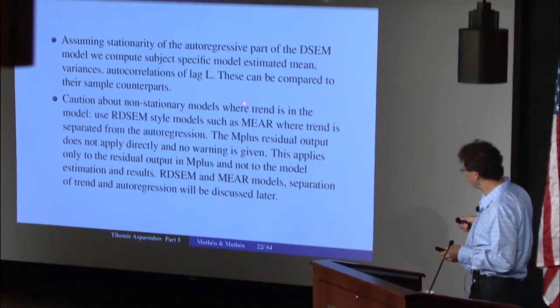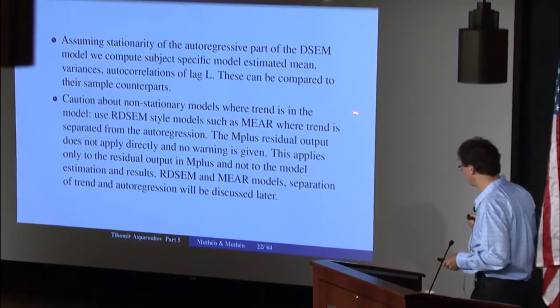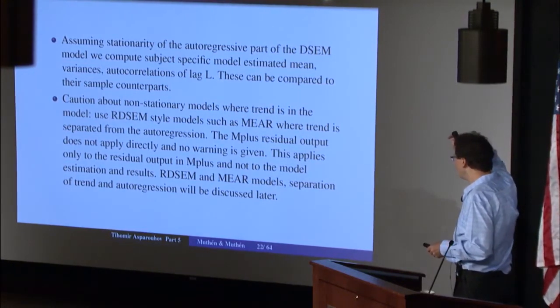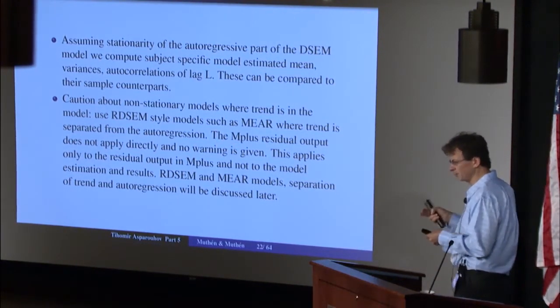If you have a trend in the autoregressive part of the model, the estimated means and covariances can be incorrect — I'll show an example of that later. The key outputs that depend on the stationarity assumption are the residual output, the TECH4 output, and the standardized estimates. There is a way to deal with this: you can use residual design-style models such as the MIMIC model, which basically extracts the trend from the autoregressive part, keeping the autoregressive part stationary.